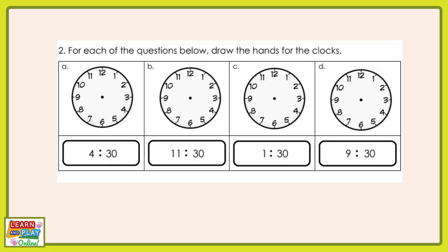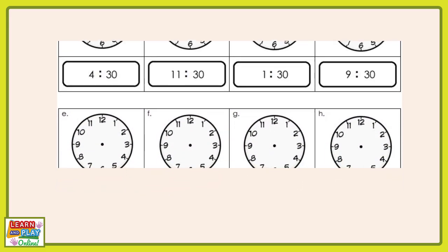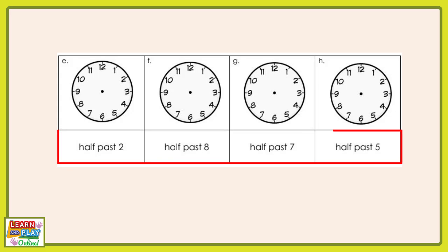Now let's move on to the last four questions of the worksheet. Read the times in the boxes below and draw the hands for the analog clocks above. Make sure you pause the video now to give yourself time to answer these questions. There will be a countdown before we show you the answers. Here is how all of your clocks should look.